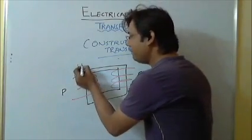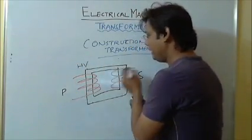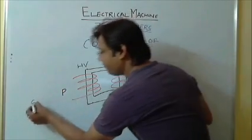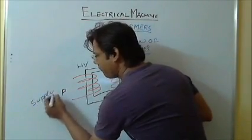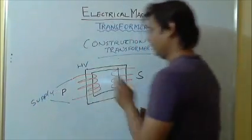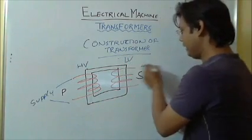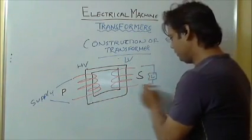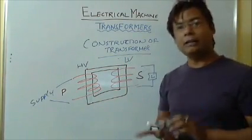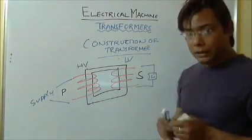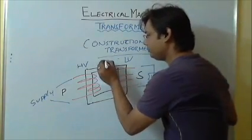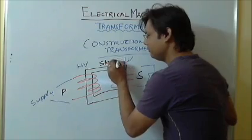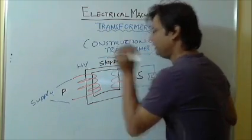When I connect my high voltage winding to primary or to the supply, and my low voltage winding is connected to the load, then it is called the secondary, and this is called a step-down transformer.